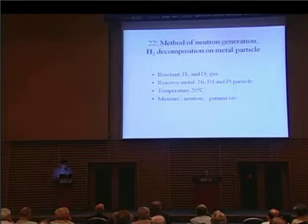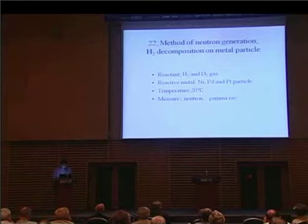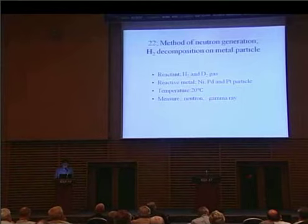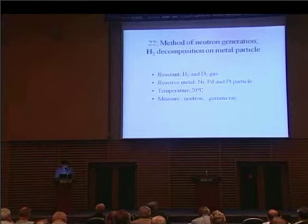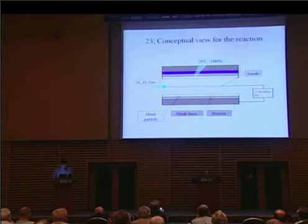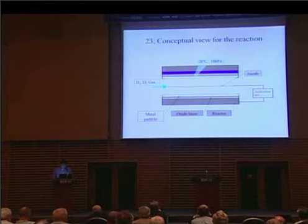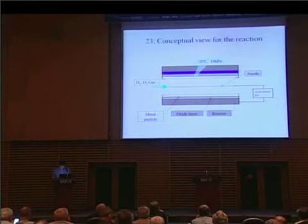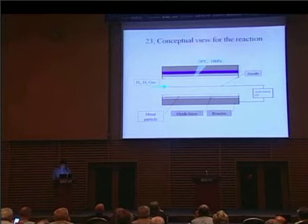I show another method to generate neutrons. We used metal particles as reactive materials; in this experiment, nickel was used. The reactant was deuterium gas. Reaction gas was injected into the reactive metal surface. Then we confirmed the occurrence of strong neutron emission. This shows a conception drawing of the experimental condition: deuterium gas was injected into the reactive material surface, the gas was absorbed and released, and after that we observed neutron emission.